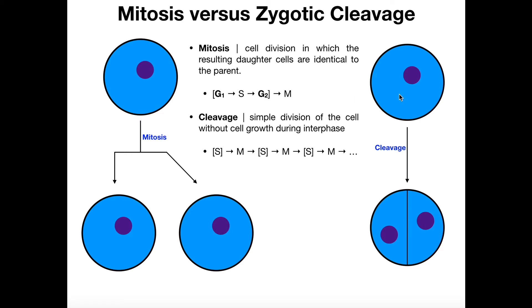Cleavage is different. When we look at the general progression of cleavage, there are no growth phases — just an S phase, then mitosis, repeating. In cleavage, the zygote divides into two cells, but notice they're each basically half the size of the original. The cell gets divided in half, and you now have two daughter cells that are half the size of the original.